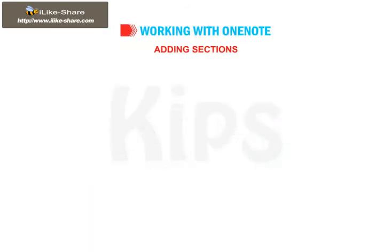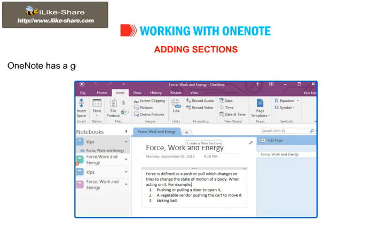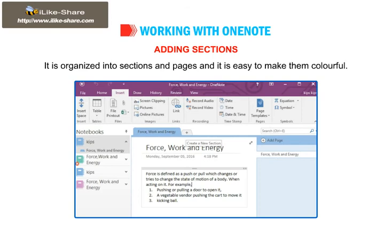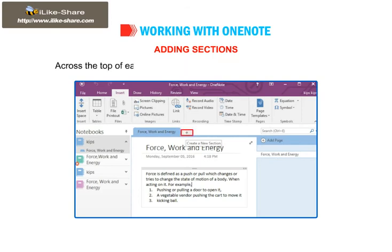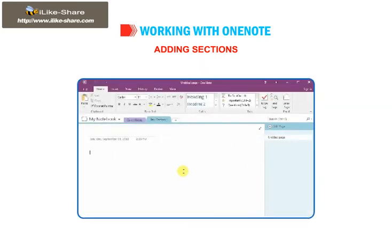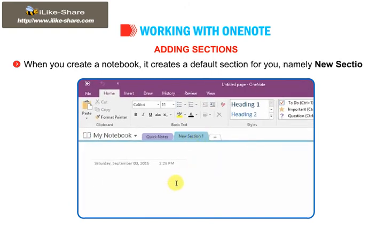Let us learn how to add sections. Just like our paper notebooks, OneNote notebooks are a collection of note pages. OneNote has a good organizational structure that makes it easy to keep everything in its place. It is organized into sections and pages, and it is easy to make them colorful. Across the top of each notebook are tabs, each representing a section. You can have as many sections or pages in an OneNote notebook as you desire. When you create a notebook, it creates a default section for you, namely New Section 1.